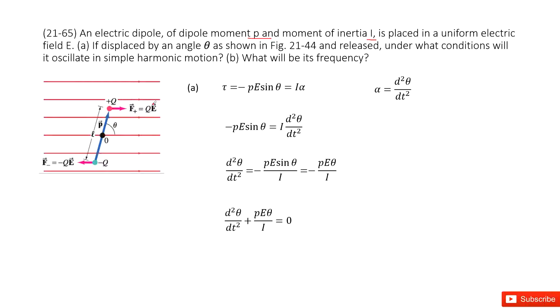This dipole is placed in a uniform electric field E. So now we have three quantities: P, I, and E. And this angle theta is given. Under what condition will it oscillate in simple harmonic motion?